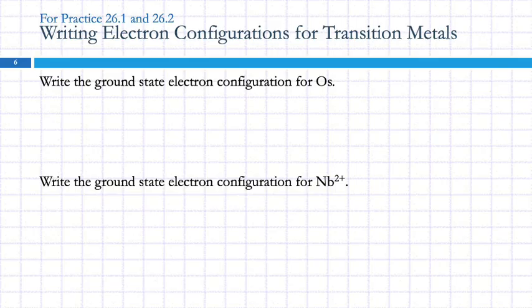Let's see if we can work through an example. Write the ground state electron configuration for Os — osmium. It's a take-home test, so you can use whatever resources you want.